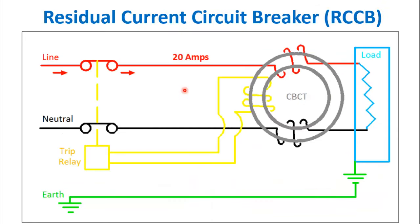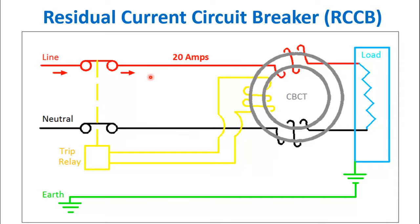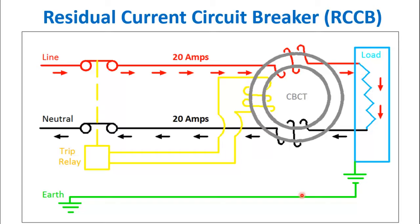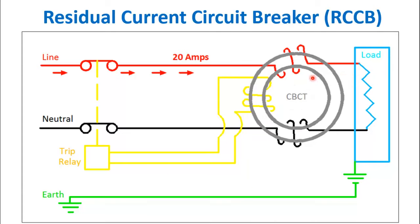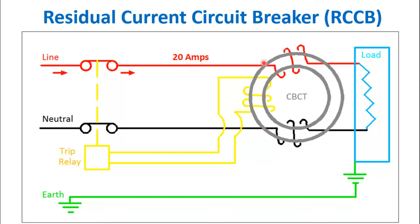Now I will explain the working principle of residual current circuit breaker RCCB, which is the more modernized version of ELCB. Taking the example of normal operation where 20 amperes of current is flowing from the phase through the load into the neutral and nothing is flowing through the earth conductor. Here you can see a ring type CT, called CBCT or core balance CT. Both the phase and the neutral pass through this core balance CT, and there is a secondary winding connected to the trip relay. During normal operation, 20 amperes are flowing through the circuit into the neutral and nothing is flowing into the earth.